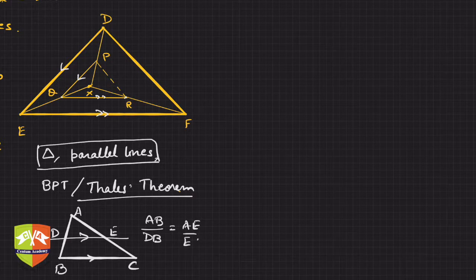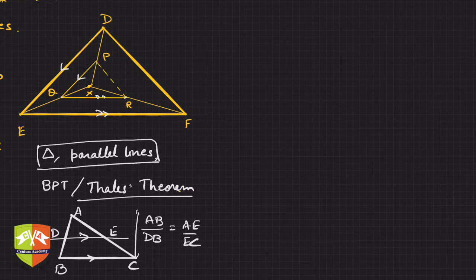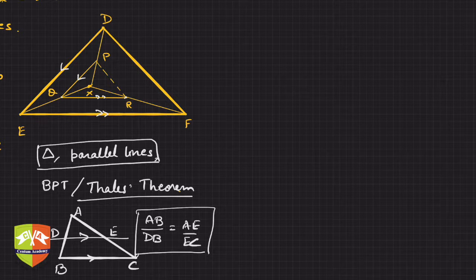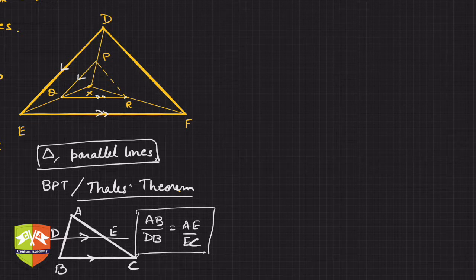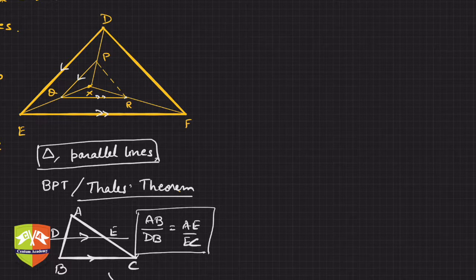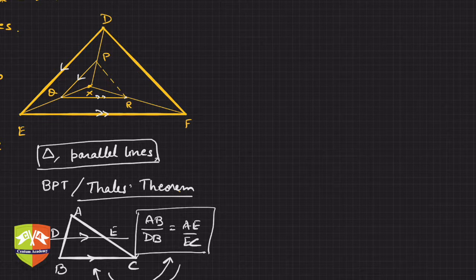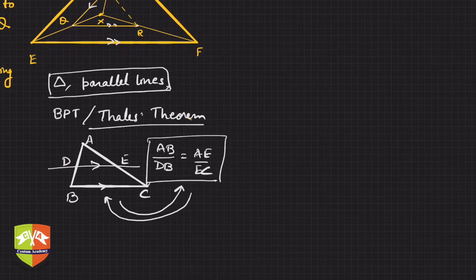And the converse of Thales' theorem is also true. The converse of Thales' theorem is that if this ratio is ascertained, then the line which is cutting the two sides at point D and E will be parallel to BC. Hence if this goes to here, this also comes back to here. This is what we have learned in case of Thales' theorem and converse of Thales' theorem.